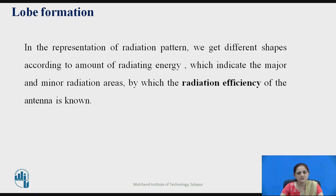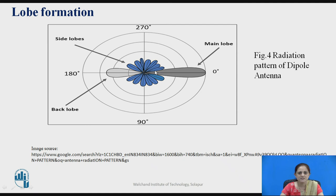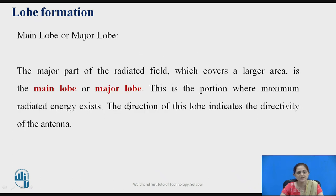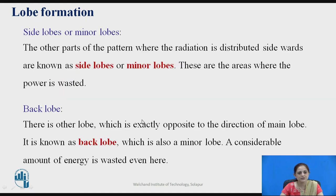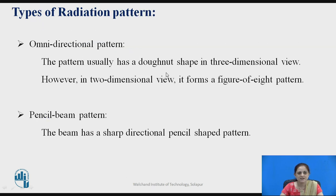In the representation of a radiation pattern we get different shapes according to the amount of radiating energy, represented in terms of radiation efficiency. There are different lobes: the main lobe, the side lobes, and the back lobe. The main lobe is the major part of the radiated field covering the largest area, where the maximum radiated energy exists, and its direction indicates the directivity of the antenna. Side lobes are where radiation is distributed sidewards — these are areas where power is wasted. The back lobe is opposite to the main lobe and is also known as the minor lobe, where a considerable amount of energy is also wasted.